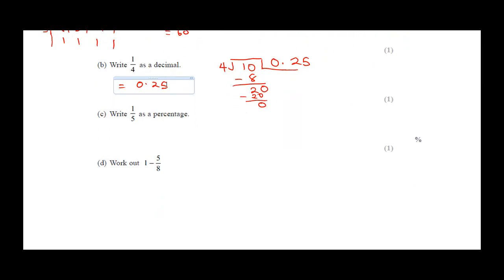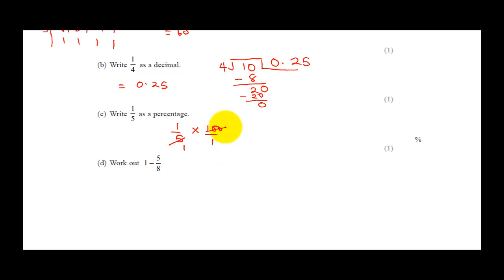Write 1/5 as a percentage. The easiest way is to multiply by 100/1: (1/5) × 100 = 20. So 1/5 = 20%.